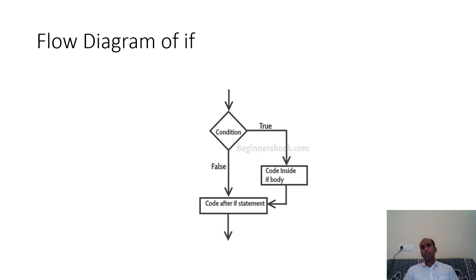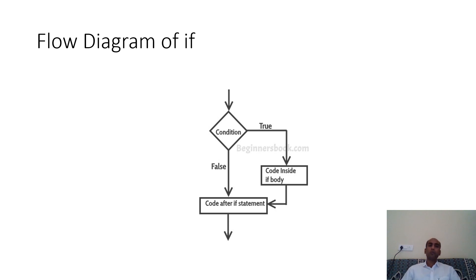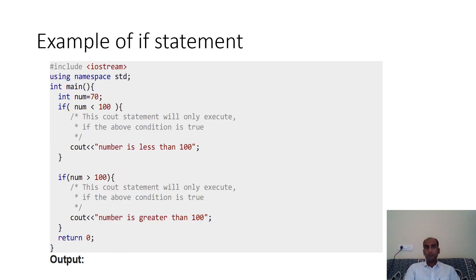Looking at the flow diagram: first the condition is checked. If the condition is true, then the code inside the if body will get executed. If the condition is false, then the code after the if statement will execute. Take care — code after the if statement will execute in both cases, whether the condition is true or false. The code inside the if statement executes only when the condition is true.